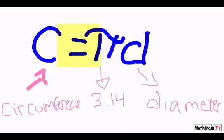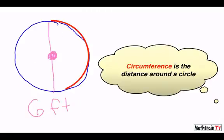So circumference equals pi, or 3.14, times the diameter. So let's try finding the circumference in an example.